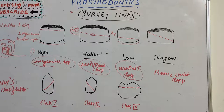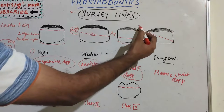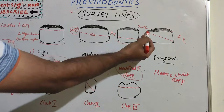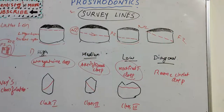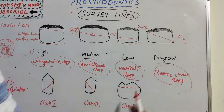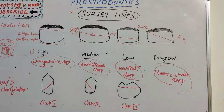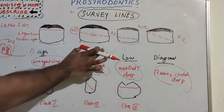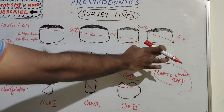The diagonal survey line travels diagonally from near the occlusal surface in the near zone to the gingival area in the far zone. So it goes from the occlusal line to the gingival line diagonally. For the diagonal survey line, we use a reverse circlet clasp.